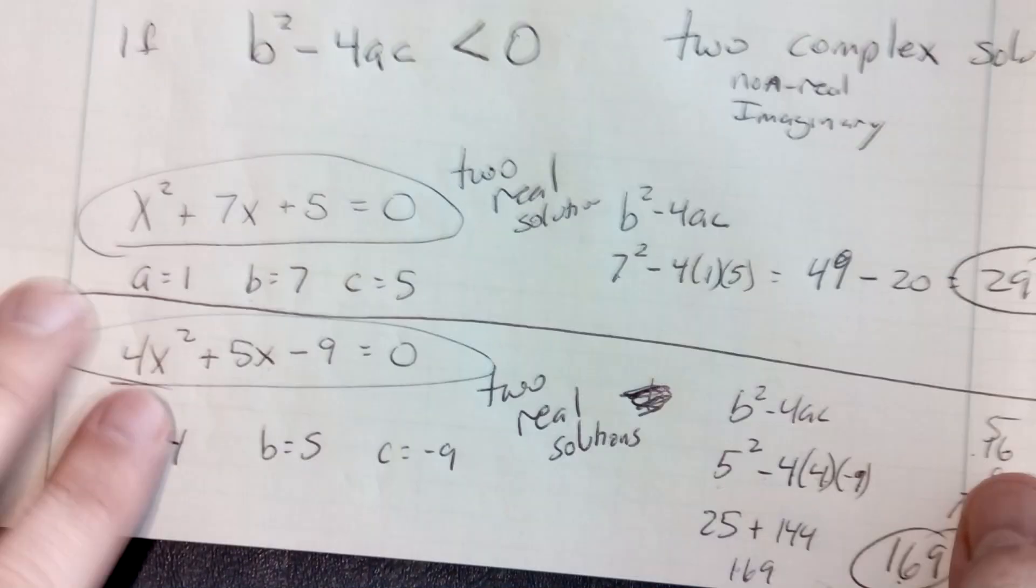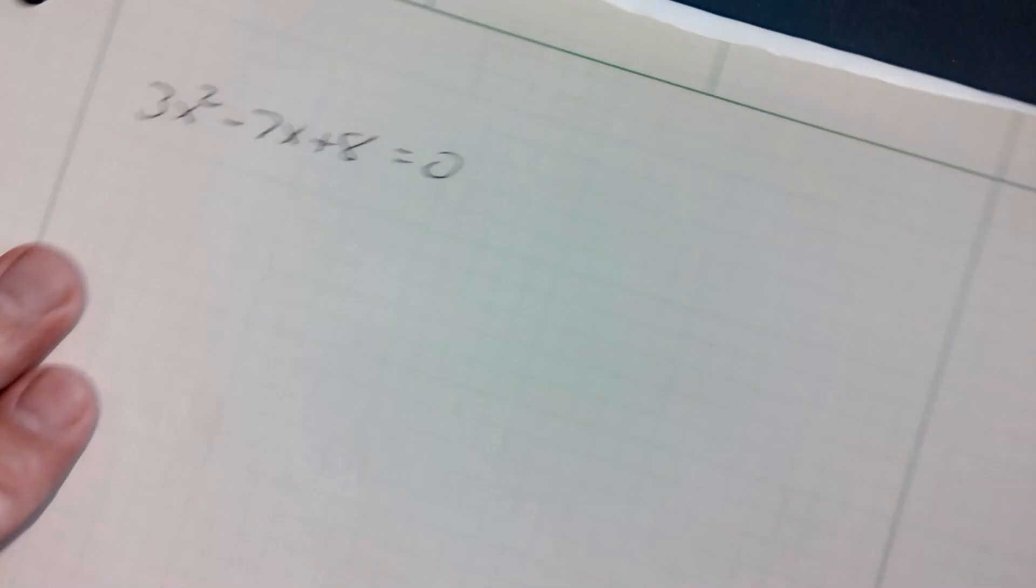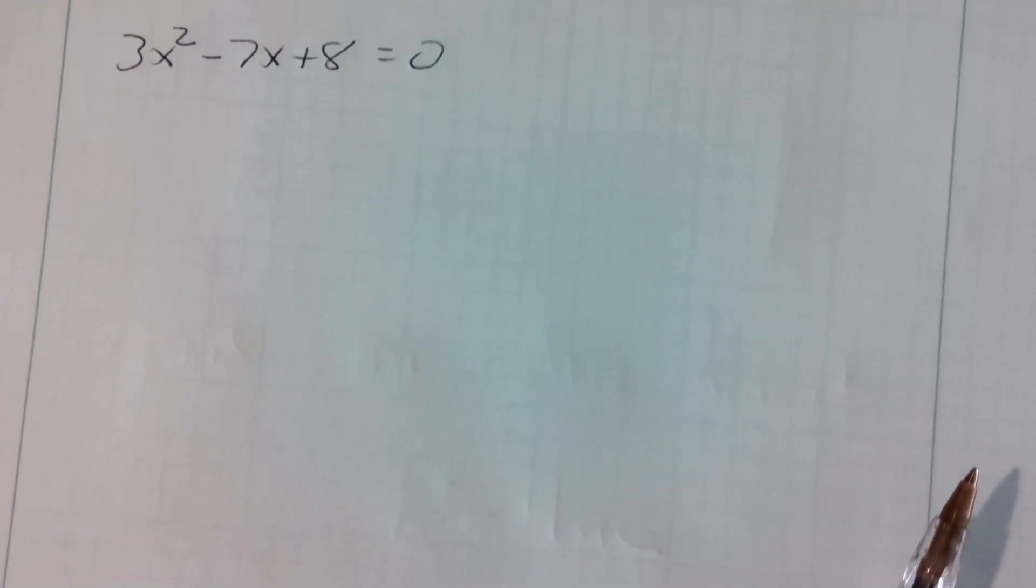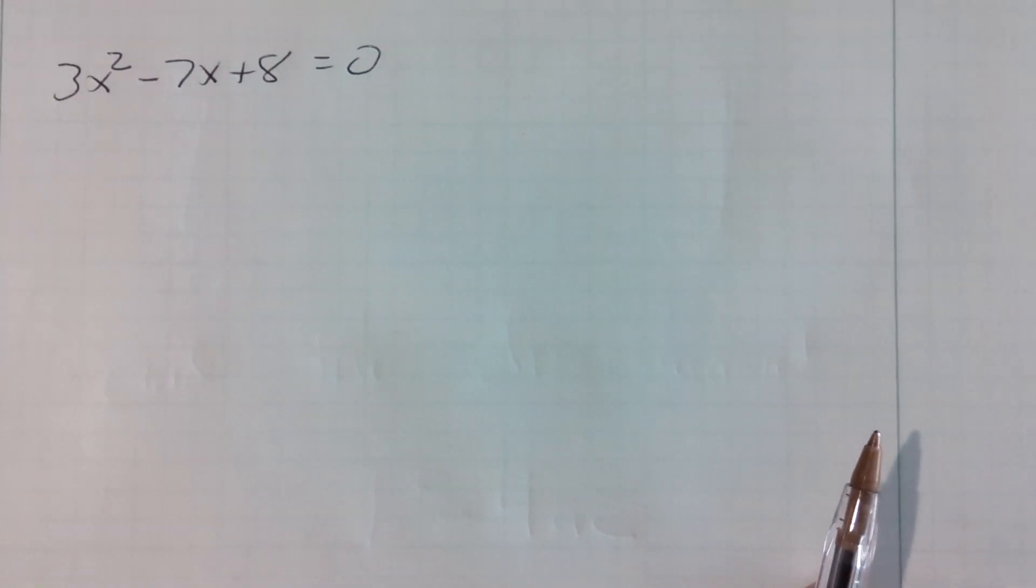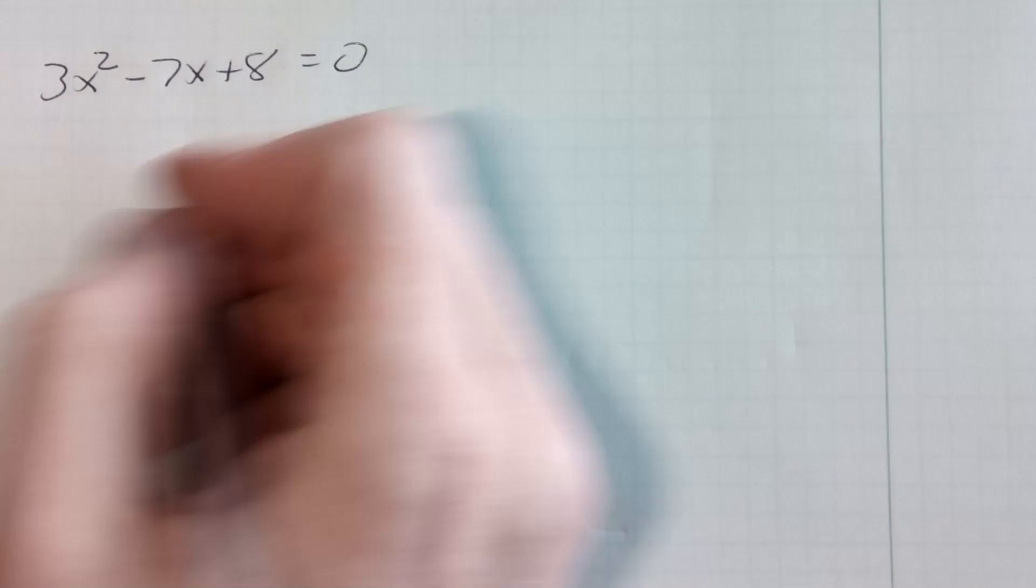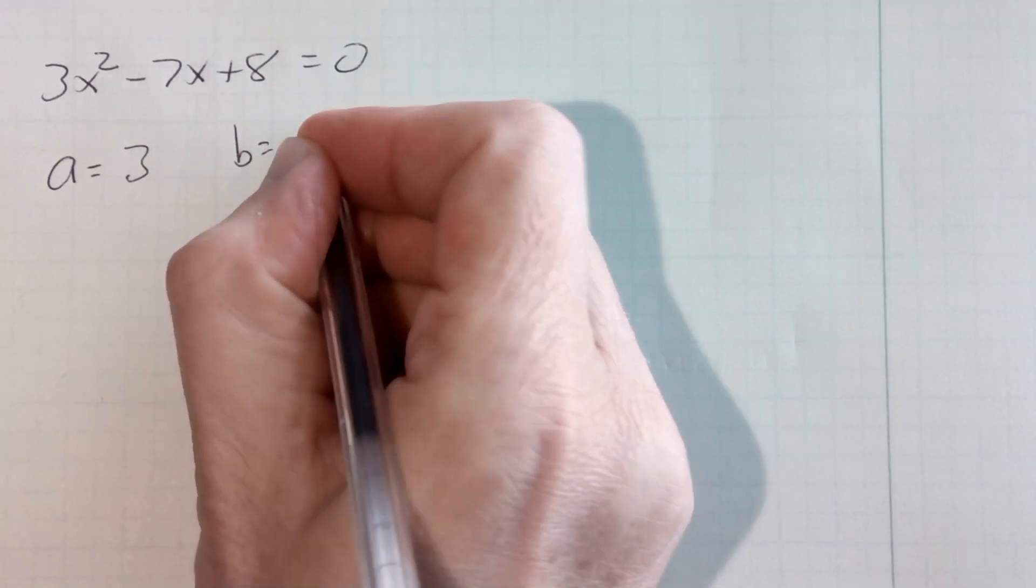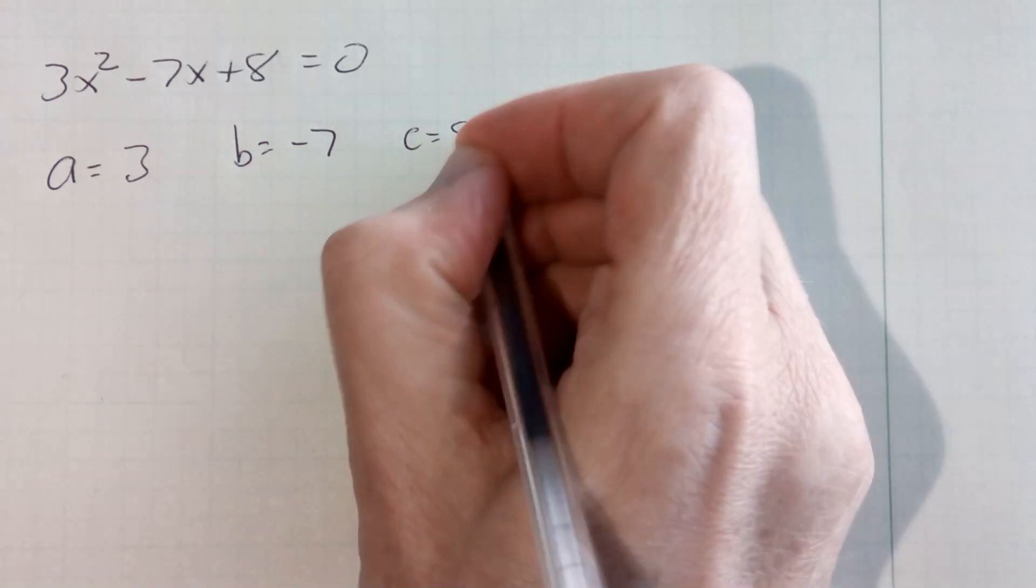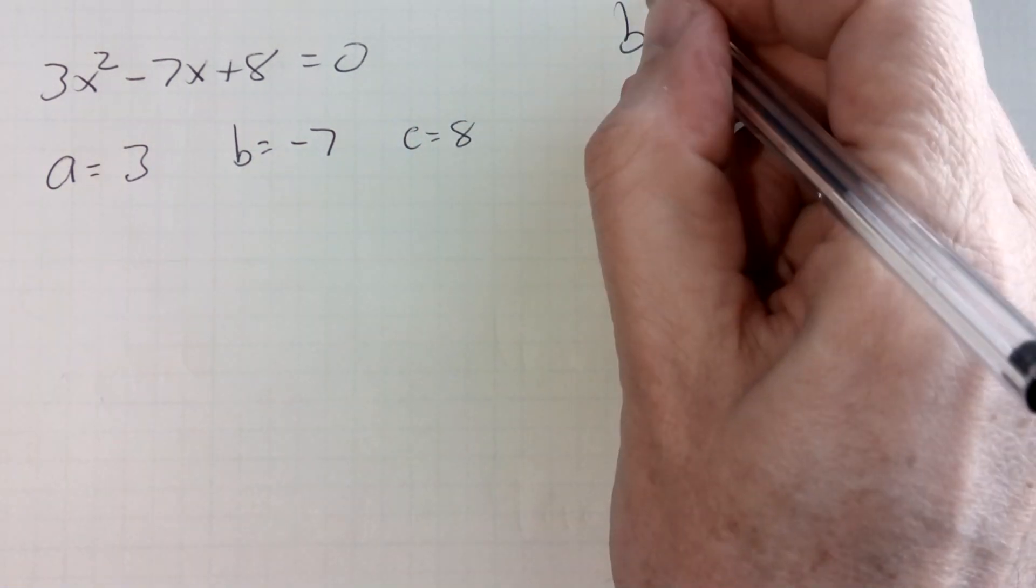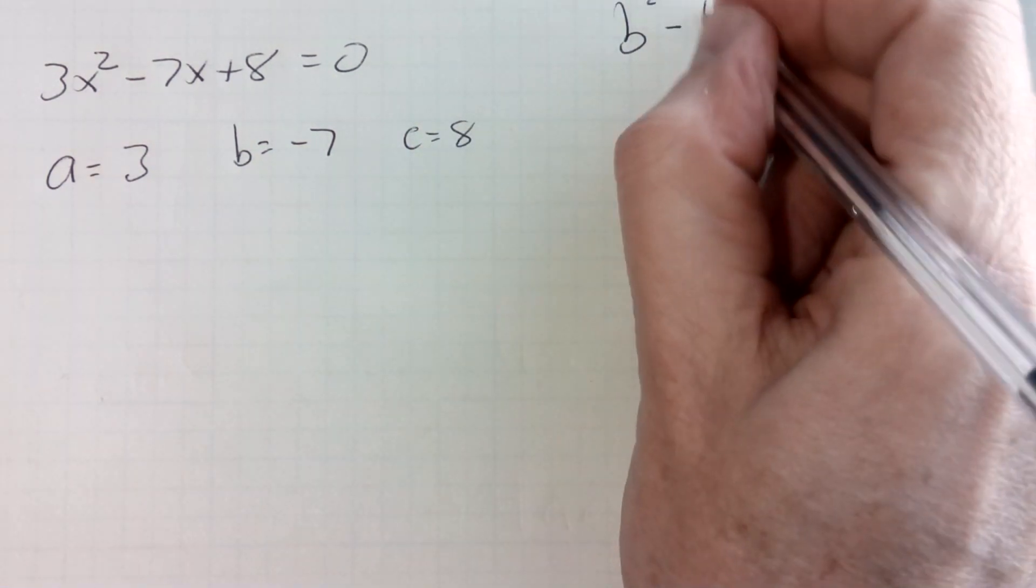Let's do another one. We have this one here, x-squared plus 7x plus 8 equals 0. I'm going to let a equal 1, b equals negative 7, and c equals 8, and I'm doing just the discriminant, b-squared minus 4ac.